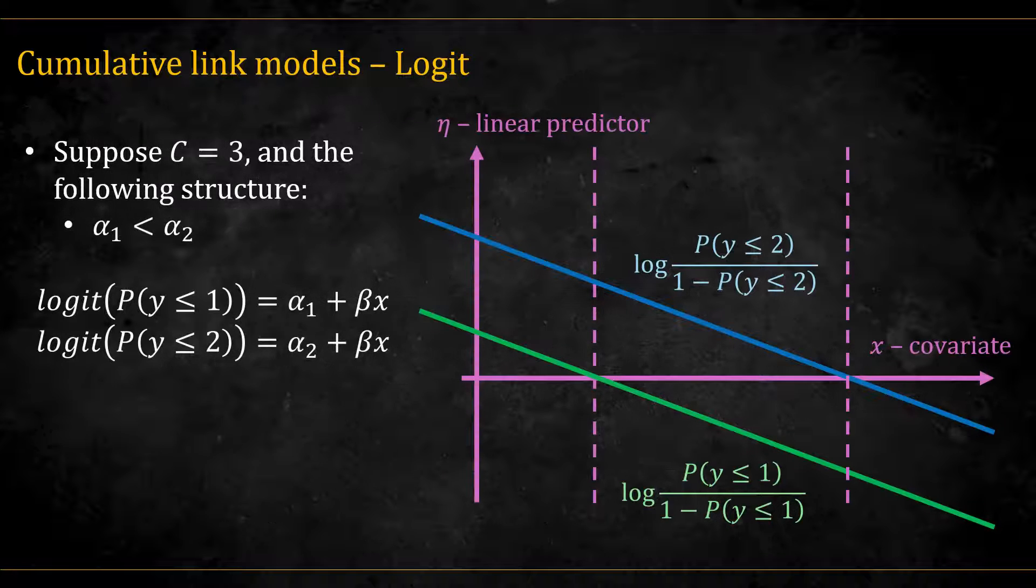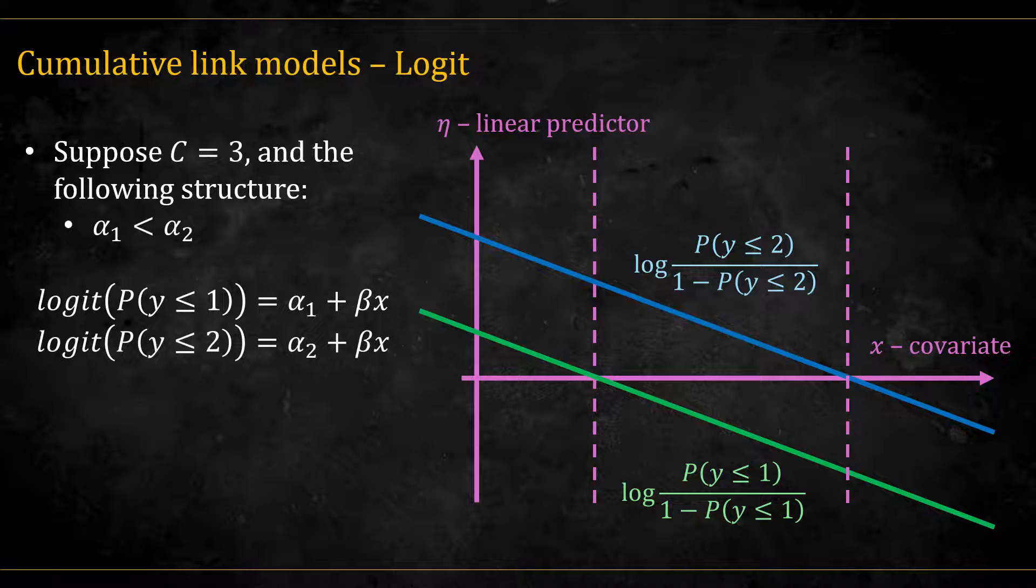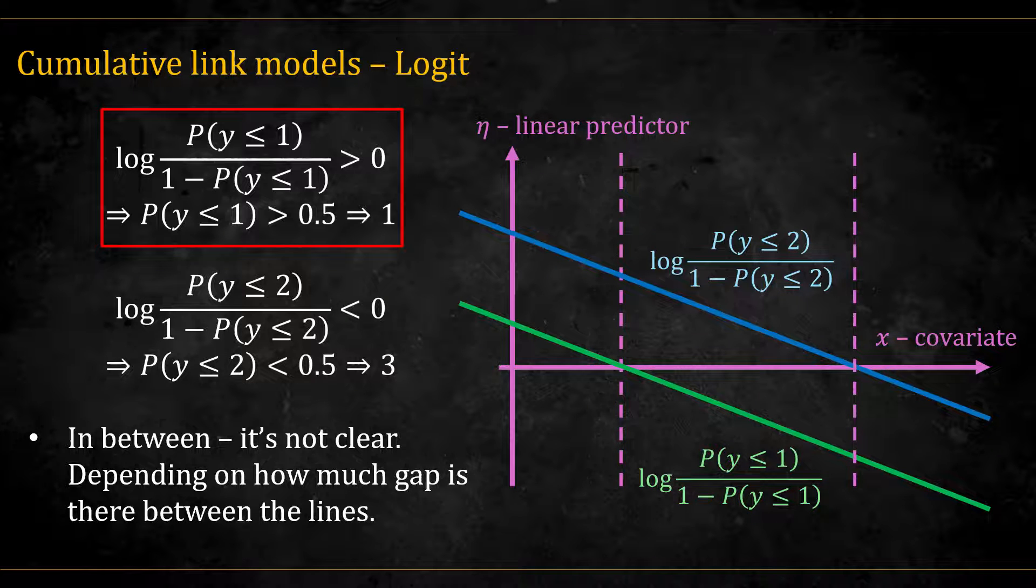Let's try to get some intuition for this model. Suppose we have three classes. That means we are modeling two cumulative probabilities. And so we have the following structure. Logit of p y less equal to 1 is equal to alpha 1 plus beta x. And logit of p y less equal to 2 is alpha 2 plus beta x. We assume alpha 1 is smaller than alpha 2. In the graph, you can see the two linear predictor lines. When x is below this line here, we have that the first logit is above 0, and this means that the most probable option is 1.